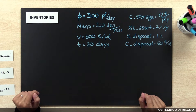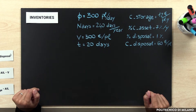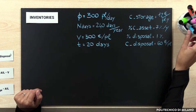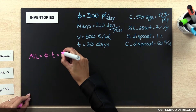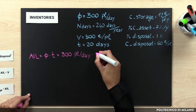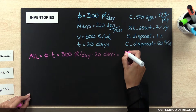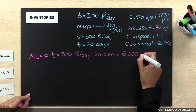We want to assess the annual inventory carrying costs. First of all, we have to evaluate the average inventory level. We consider the daily flow and the average time spent in the warehouse: 300 pallet loads per day multiplied by 20 days, giving us 6000 pallet loads.